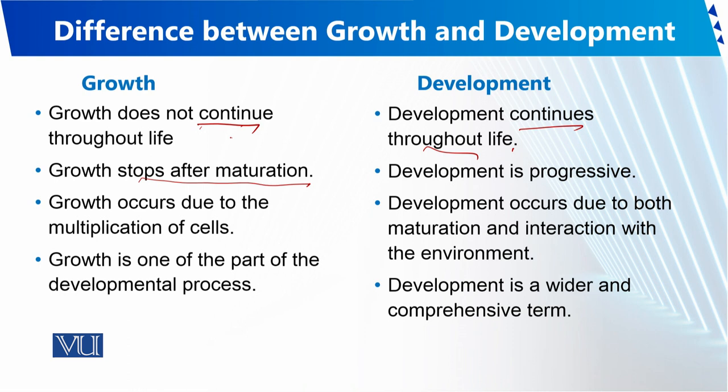Interaction with environment کا مطلب ہے جس حساب سے کوئی food لے رہا ہے اور صحت کا دارومدار ہے، اسی حساب سے اس کی maturation ہوتی ہے۔ General pattern کو ہم سب follow کرتے ہیں لیکن specific pattern depend کرتا ہے environment کے ساتھ interaction پر۔ Development is progressive — یہ بڑھتی رہتی ہے۔ Growth occurs due to the multiplication of cells — جیسے جیسے cells multiply ہوتے ہیں، ہڈیاں بڑھتی ہیں، size اور weight میں تبدیلی آتی ہے۔